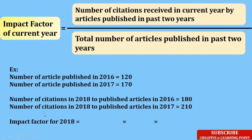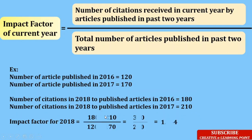Let's take one example. To calculate the impact factor for 2018, I need the number of articles published in 2016 and 2017, which are 120 and 170 respectively. The number of citations in 2018 to articles published in 2016 is 180, and the number of citations in 2018 to articles published in 2017 is 210. Substituting these values — citations in the numerator and total published articles in the denominator — I get the impact factor for 2018 as 1.344.